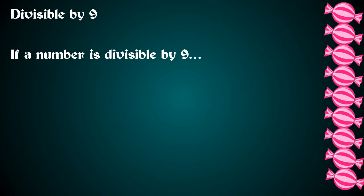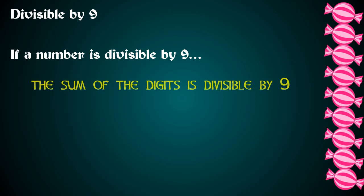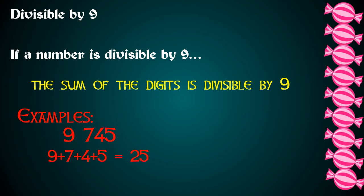What about numbers that are divisible by 9? If a number is divisible by 9, the sum of the digits is divisible by 9. If we add up the sum of the digits of 9,745 — 9 plus 7 plus 4 plus 5 — we get 25. When we divide 25 by 9, we get 2 and 77 hundredths. That's not equally divided, so 9,745 is not divisible by 9.